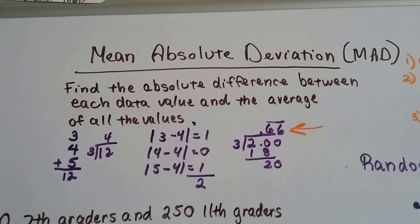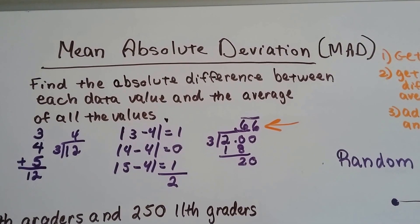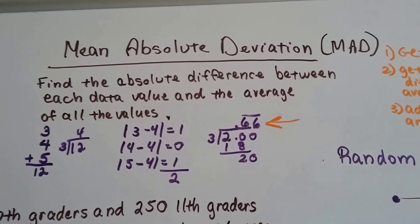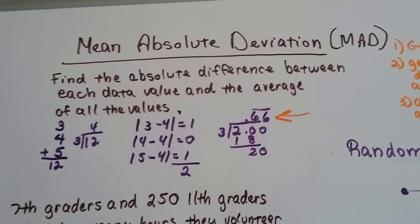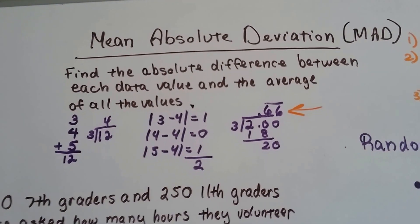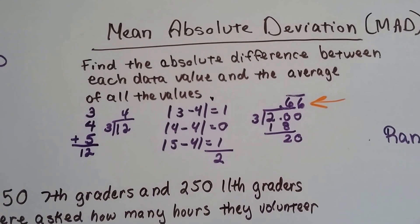For the mean absolute deviation, which we talked about in the last video at great length, what we do is we find each absolute difference between the data values and then we get the average of the values. So this is what it means.